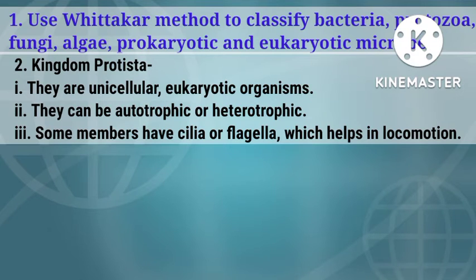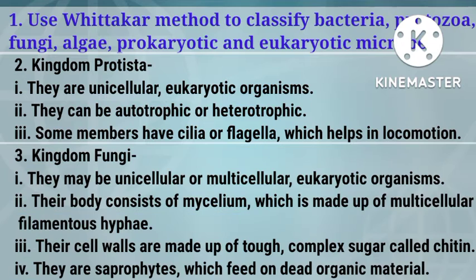Next, Kingdom Protista: they are unicellular eukaryotic organisms; they can be autotrophic or heterotrophic; some members have cilia or flagella which help in locomotion. Third kingdom is Fungi: they may be unicellular or multicellular eukaryotic organisms; their body consists of mycelium which is made up of multicellular filamentous hyphae.